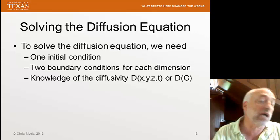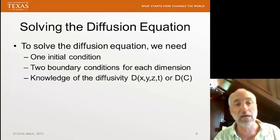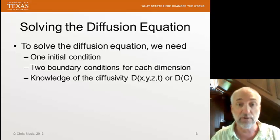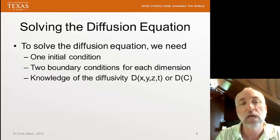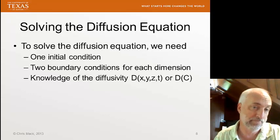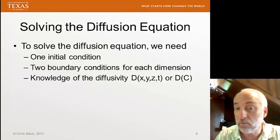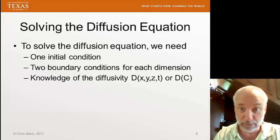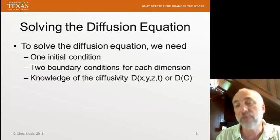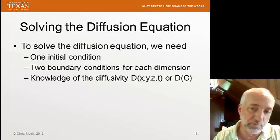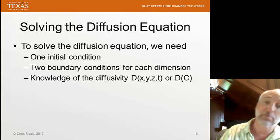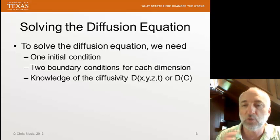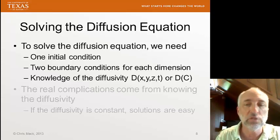Those two boundary conditions are, for example in X, the left-hand side and the right-hand side. For X and Y, it would be left and right and front and back. And X, Y, and Z would include the top and bottom. So for every dimension in the problem, we have two boundary conditions. And finally, we have to know what the diffusivity is — we need to know the diffusivity as a function of X, Y, Z, and T. It might be constant, but it might be changing in all of those dimensions. Quite frequently, the diffusivity is a function of the concentration of the dopant, which in turn is a function of X, Y, Z, and time. If we know the relationship between diffusivity and concentration, we can use this to solve our equation.